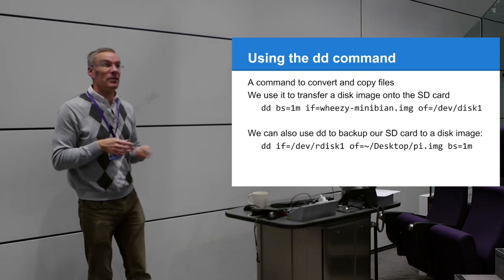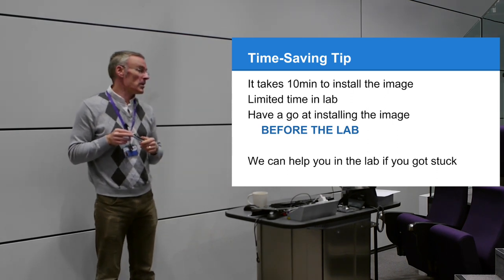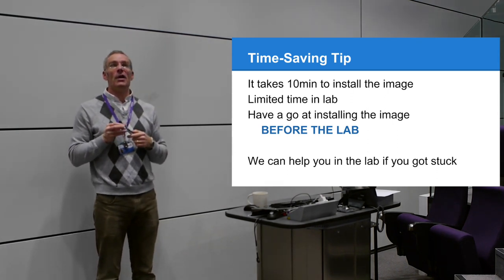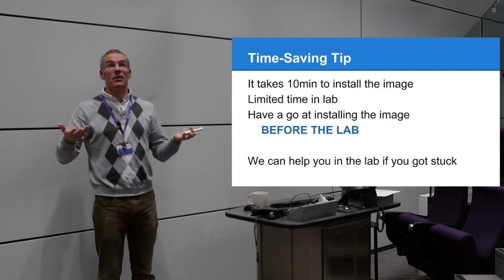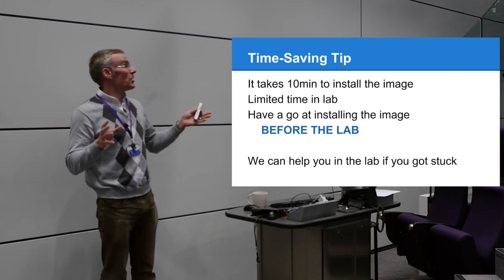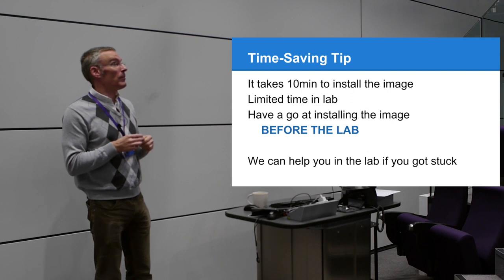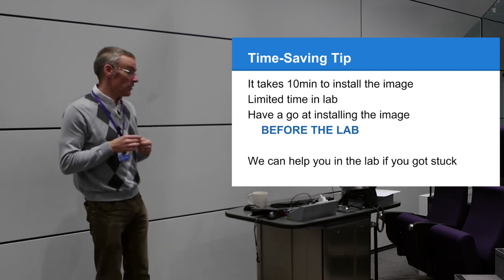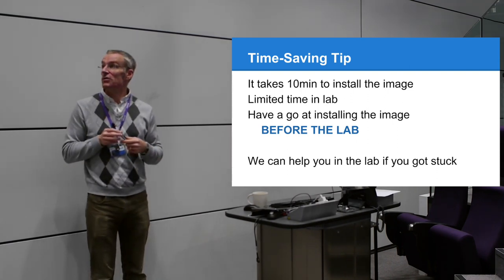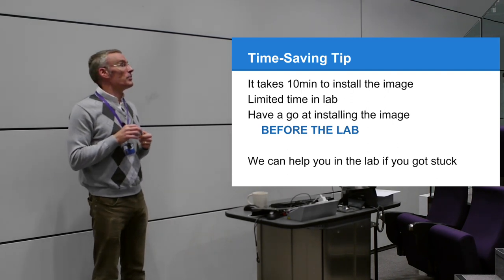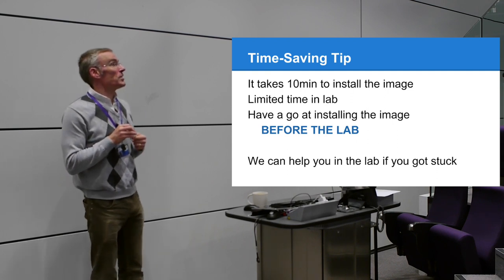Major tip: after installing a Raspberry Pi image it takes about 10 minutes. If you all turn up to the lab without the image installed on your SD card you'll have a very long queue. Please have a go at installing the image before you come to the lab session. That way you can get straight on with the lab tasks. Win32 Disk Imager won't install on university computers because it's flagged as a hacking tool.